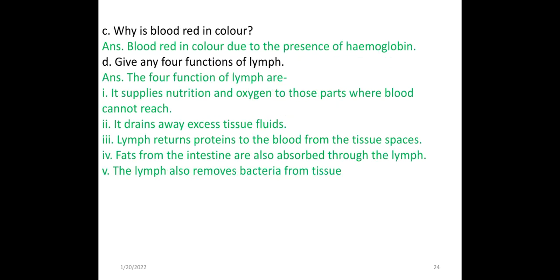Why is blood red in color? Blood is red due to the presence of hemoglobin. Give any four functions of lymph. 1. Lymph supplies nutrition and oxygen to parts where blood cannot reach. 2. It drains away excess tissue fluids. 3. Lymph returns proteins to the blood from the tissue space. 4. Fats from the intestine are absorbed through lymph, and lymph also removes bacteria from tissues.